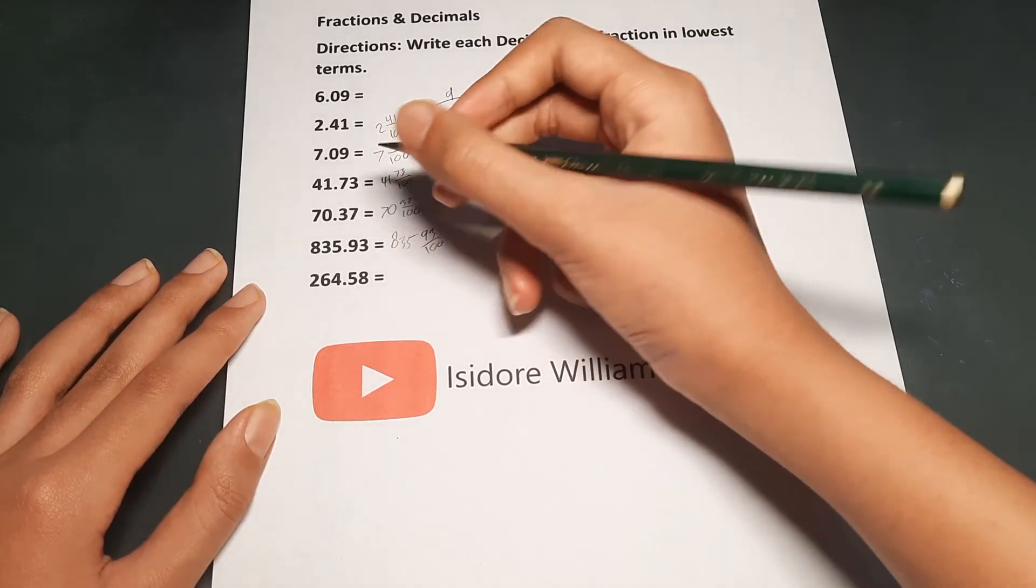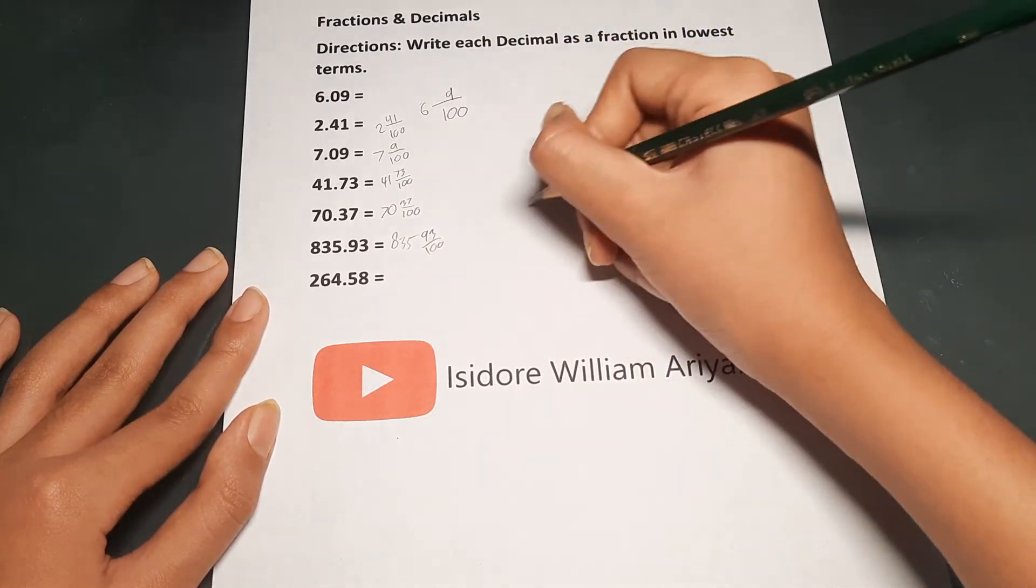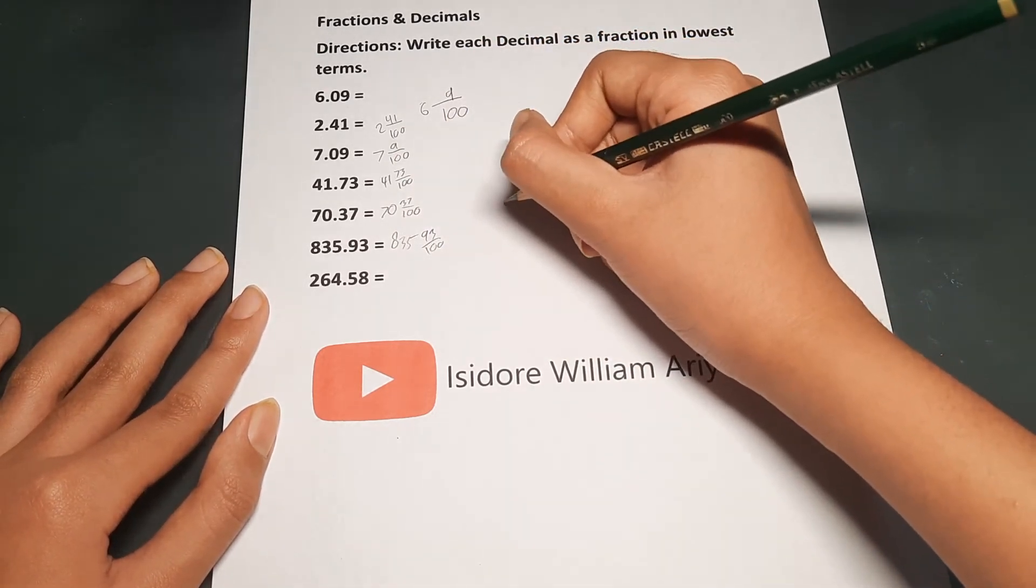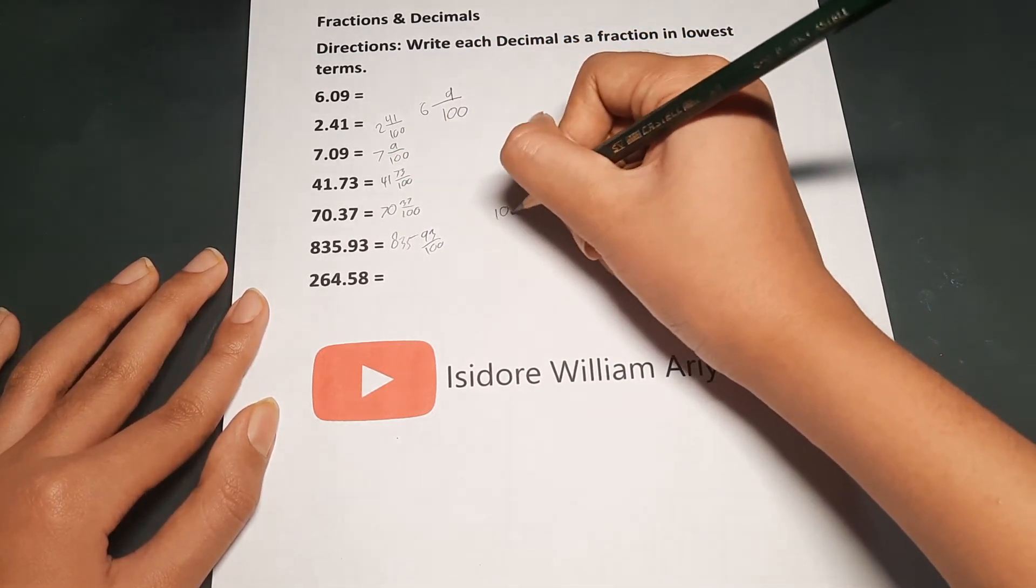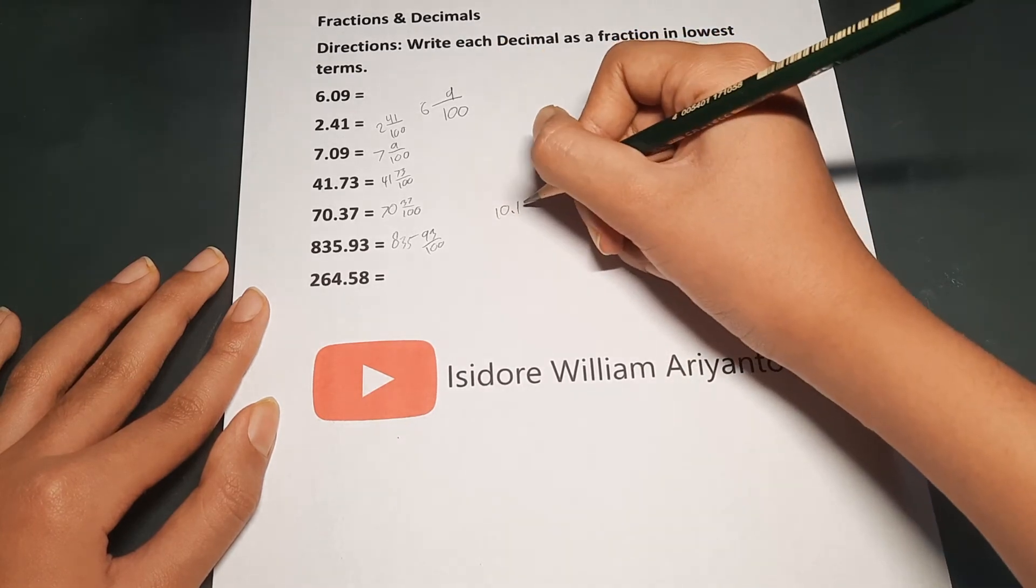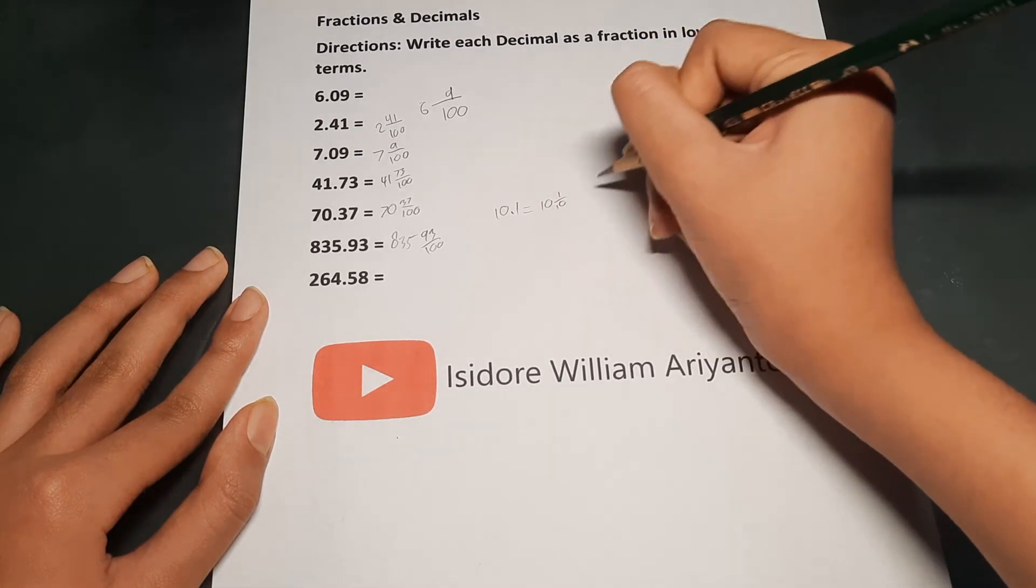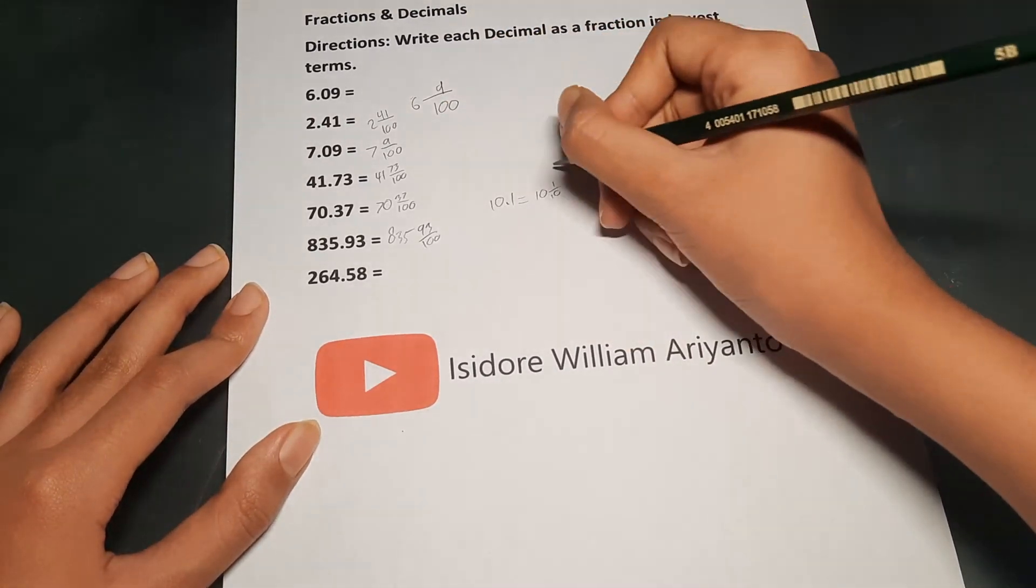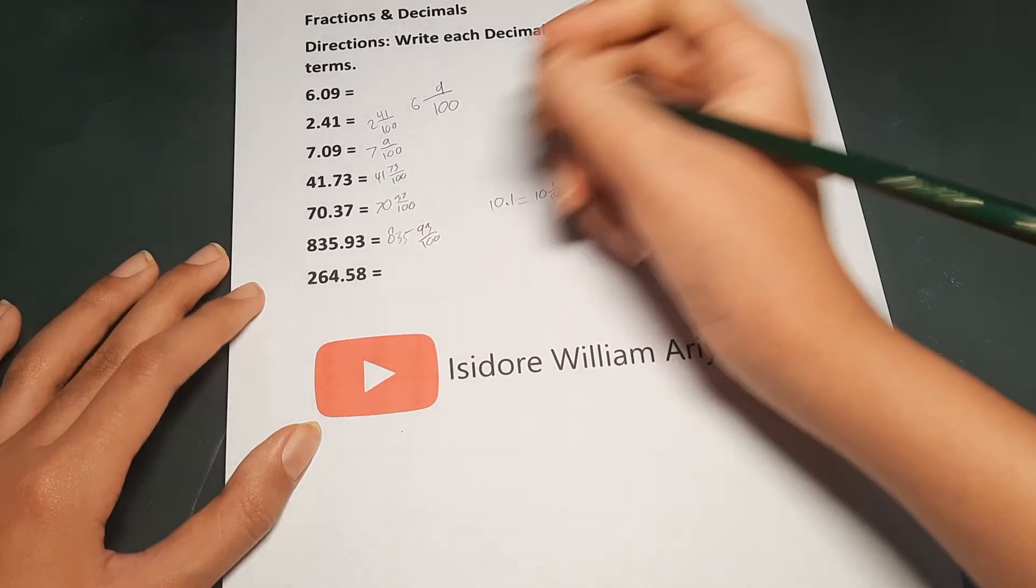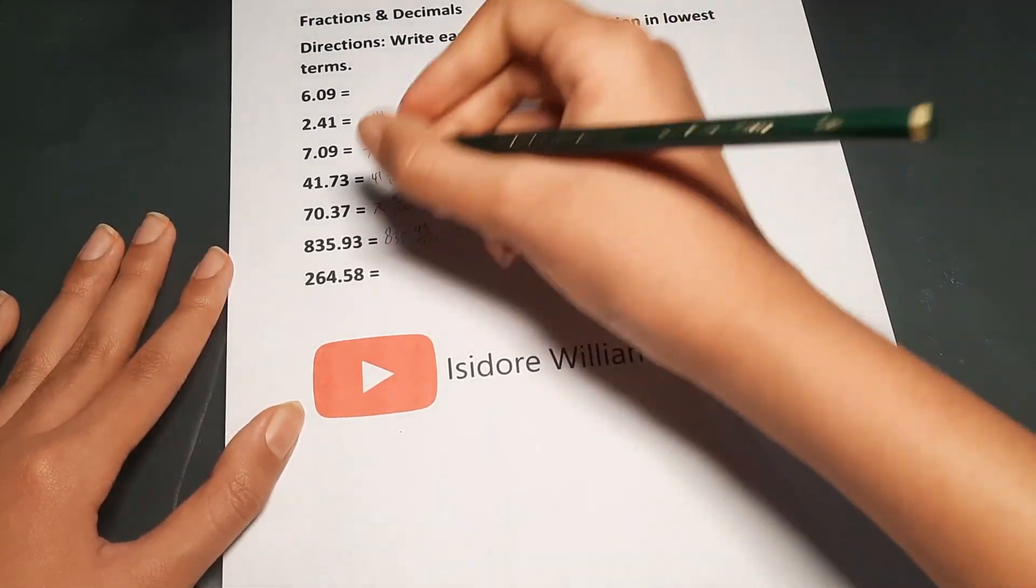This applies to every case. For example, 10.1 equals 10 and 1 over 10. You can just repeat that process.